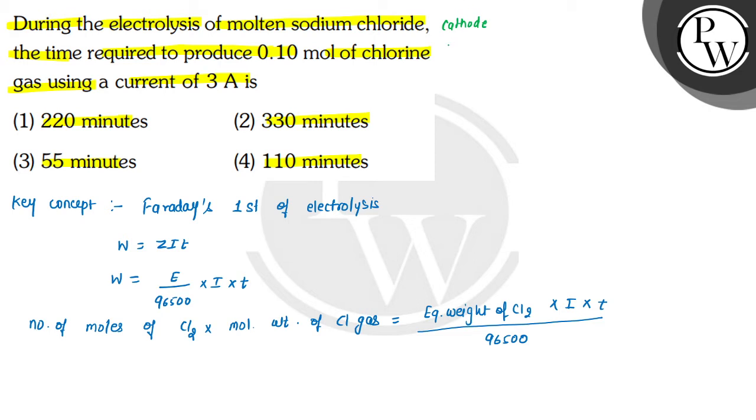At cathode 2 Na plus, plus 2 electron will give 2 Na. Sodium oxidation state was plus 1, plus 1 was converted into zero oxidation state, so this is reduction here.